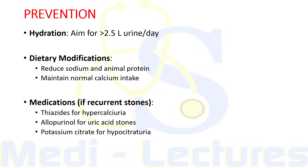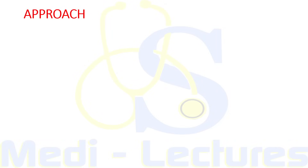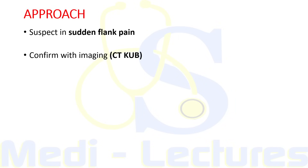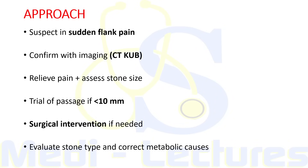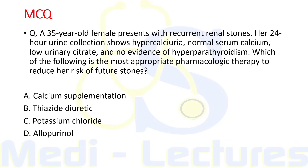When a patient comes with sudden flank pain, confirm the renal calculus with imaging — gold standard is CT-KUB. Relieve the patient's pain and assess stone size. Allow trial of passage or medical expulsion if size is less than 10 millimeters. If stone size is big or anatomy is not favorable, surgical intervention is required. Evaluate stone type and correct metabolic causes for further prevention. With this we have completed the lecture on nephrolithiasis; there is an MCQ at the end — comment your answer in the comment section.